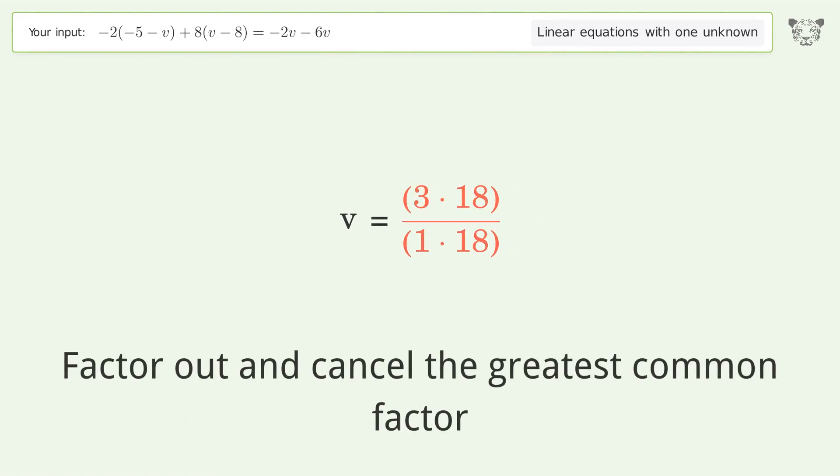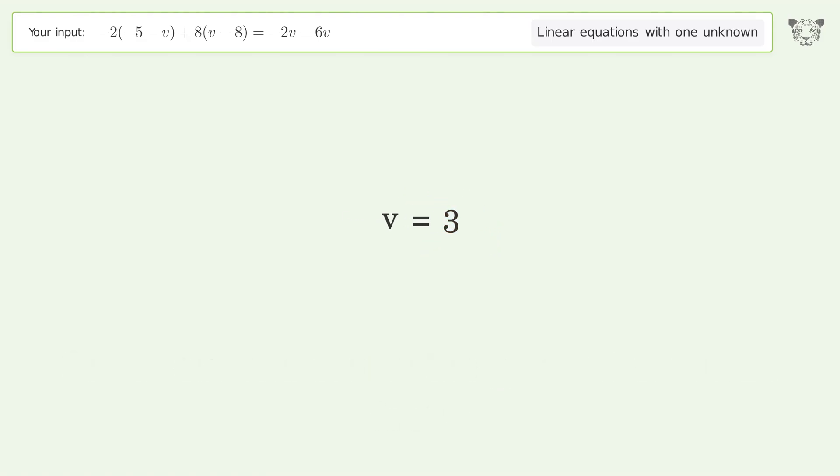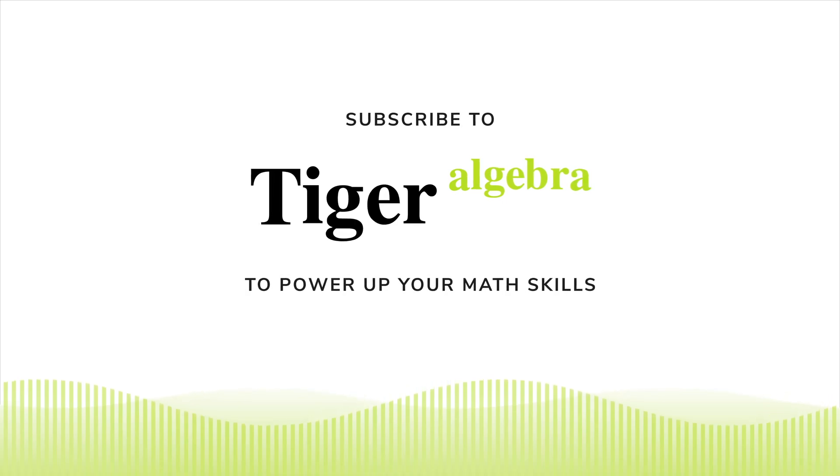Factor out and cancel the greatest common factor. And so the final result is v equals 3.